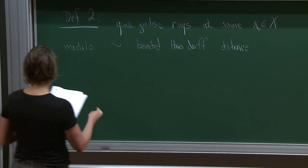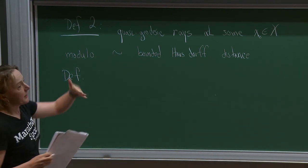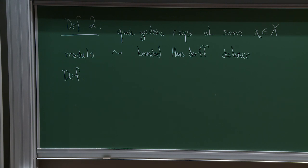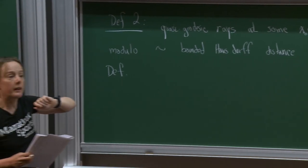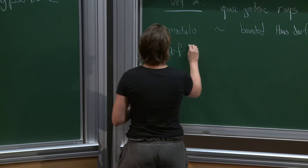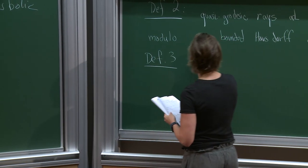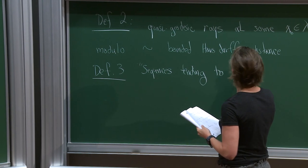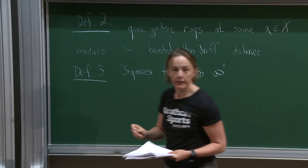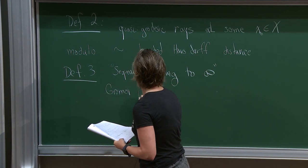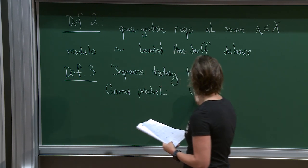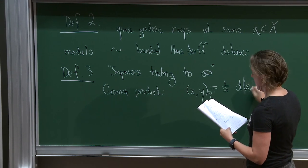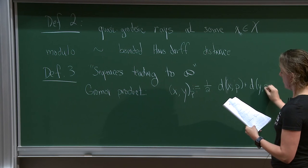Definition 3 is the one I want to talk about most. Instead of thinking about the actual ray, I'm just going to think about points going off to infinity. This is really useful — often we think of a group as just the orbit of its basepoint acting on a delta-hyperbolic space, so we just want to think about a bunch of points. The definition uses sequences tending to infinity. Let me say what that means using the Gromov product. I have (x·y)_p defined as one half times [d(x,p) + d(y,p) − d(x,y)].